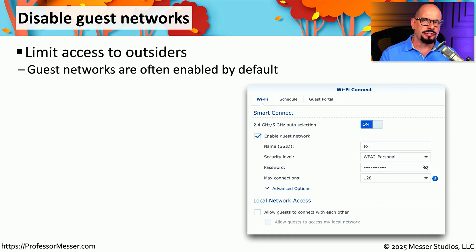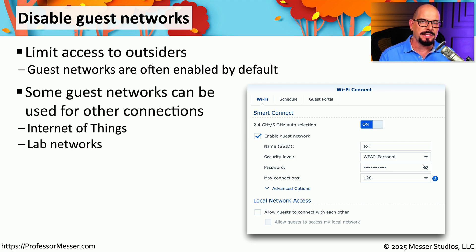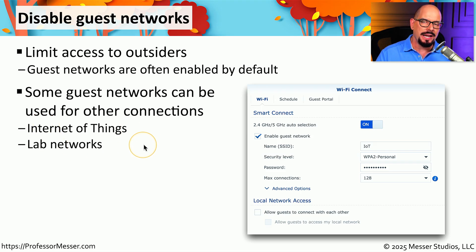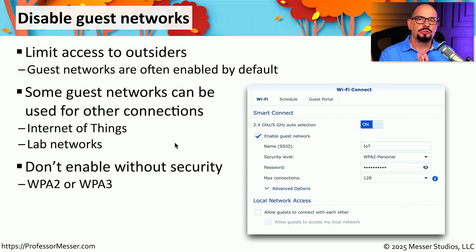In many SOHO routers, you'll notice that a guest login may be enabled by default, provided for convenience so that anyone can plug in the access point and immediately have multiple people connecting. But from a security perspective, you probably don't want anyone to be able to connect to your local wireless network. You could, however, use the guest network for other devices such as an Internet of Things network or a lab network — this keeps those devices off your main network while still providing them with internet access. Regardless of what you're implementing, always enable security on these networks, using at a minimum WPA2 and ideally WPA3.